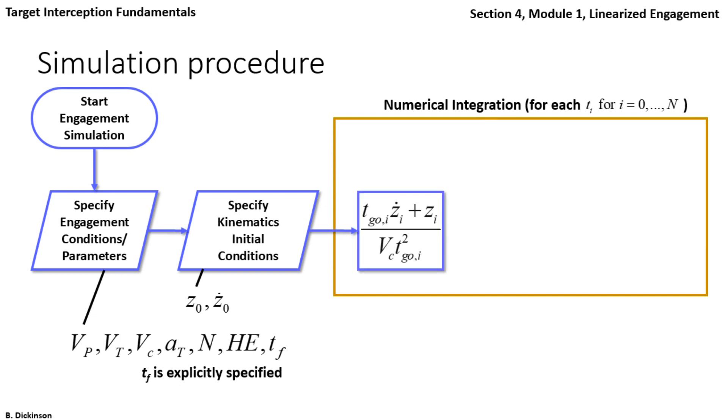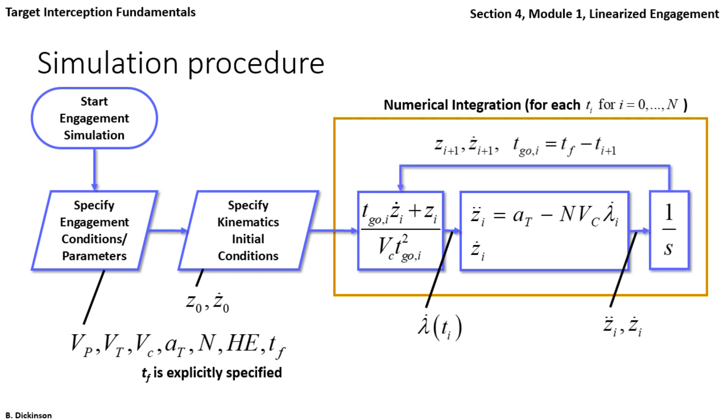These inputs are used to calculate at the current time step, line-of-sight rate. And then that's input into the kinematics, which are integrated once forward in time. Time to go is updated. And therefore, lambda dot is updated. And the loop continues, integrating forward in time, until time to go is zero.